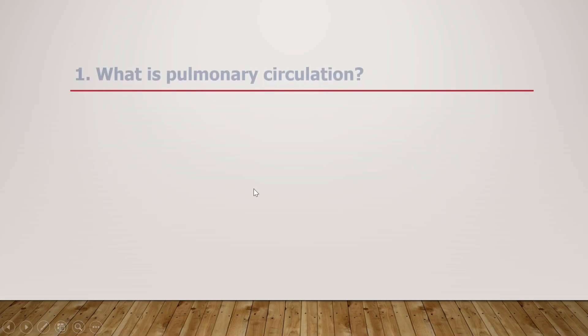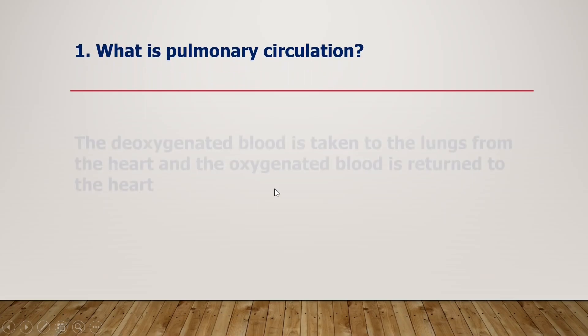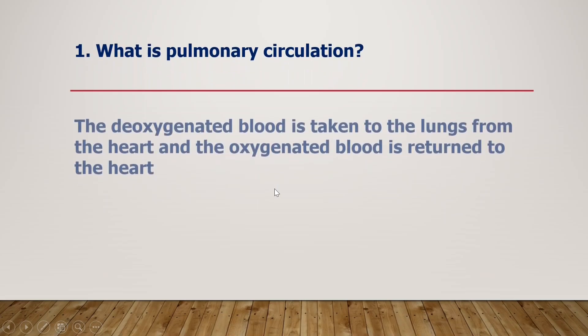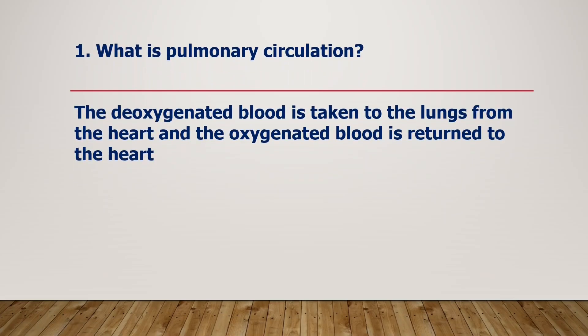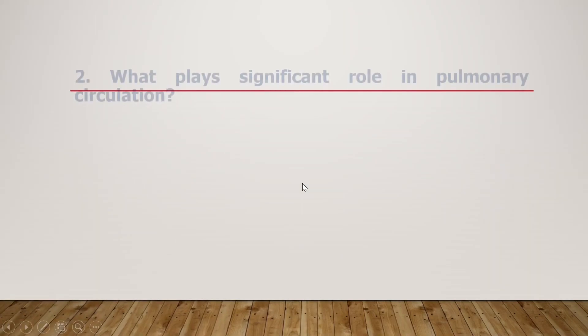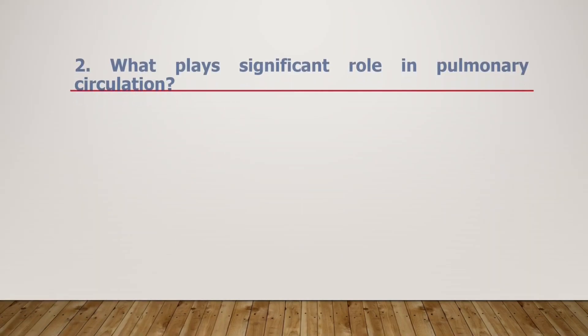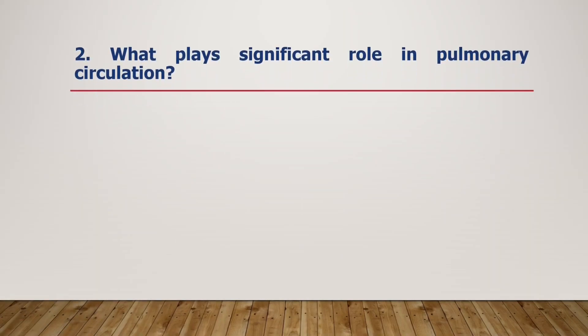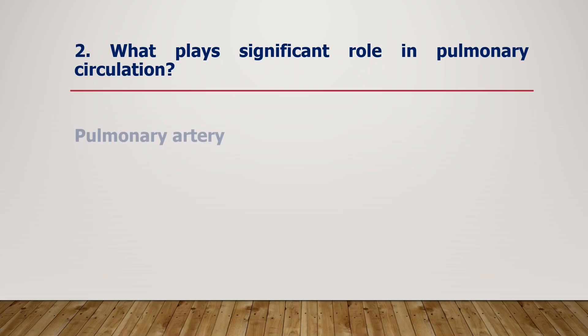In this video we look into the human circulatory system. What is pulmonary circulation? The deoxygenated blood is taken to the lungs from the heart, and the oxygenated blood is returned to the heart. Pulmonary artery plays a significant role in pulmonary circulation.